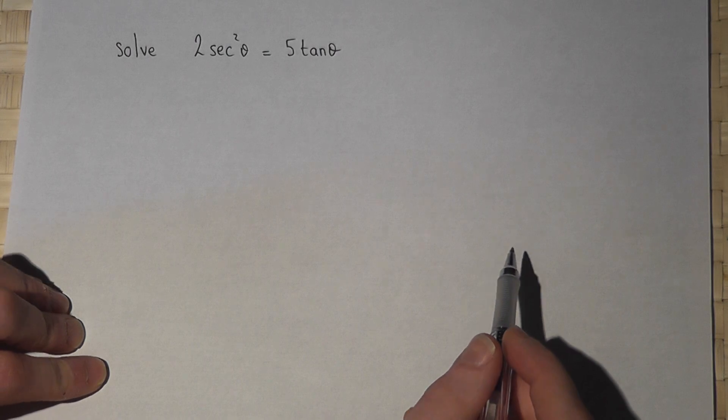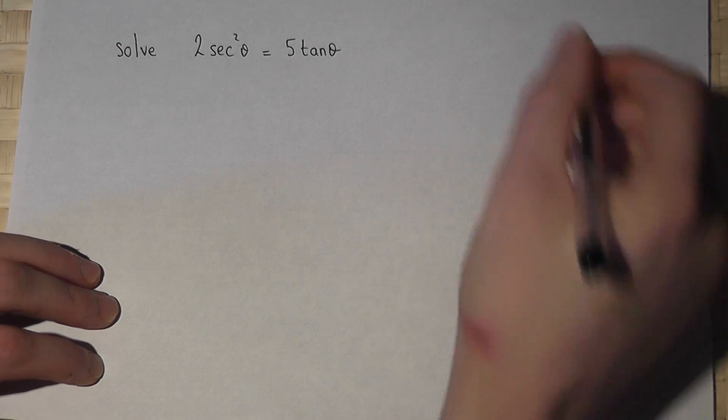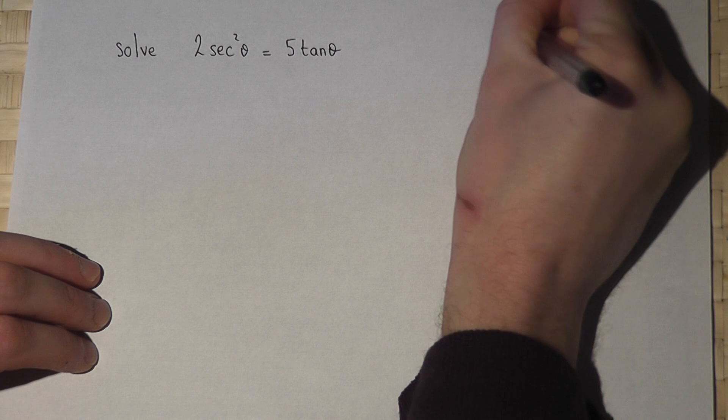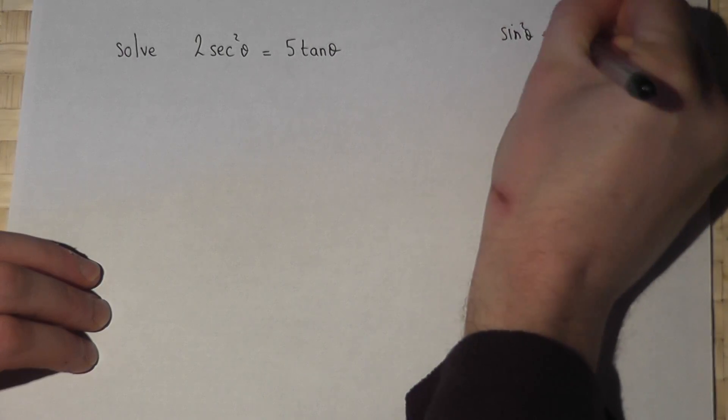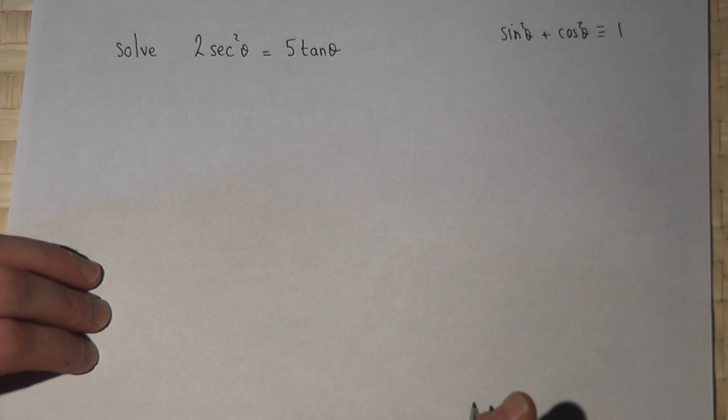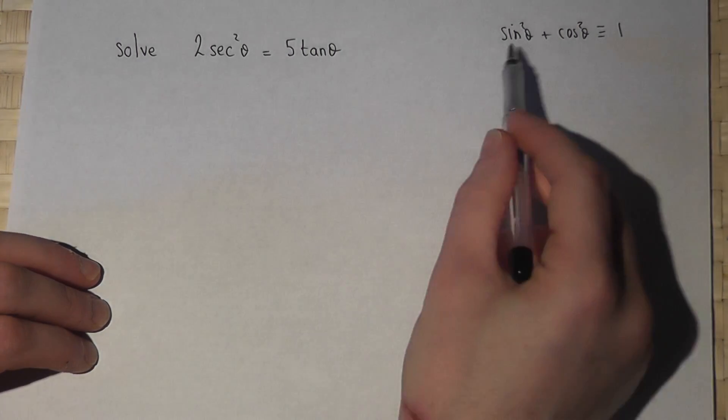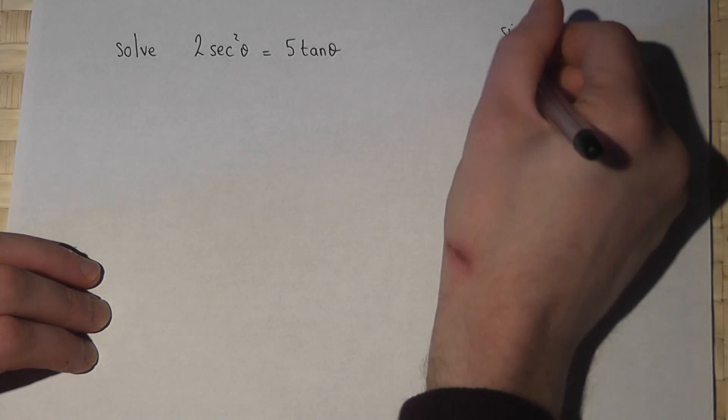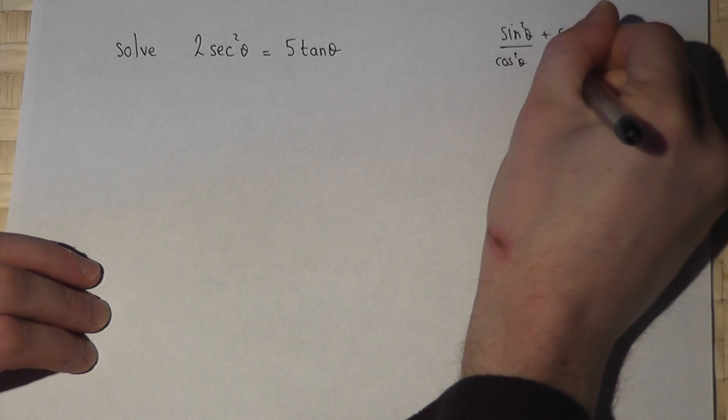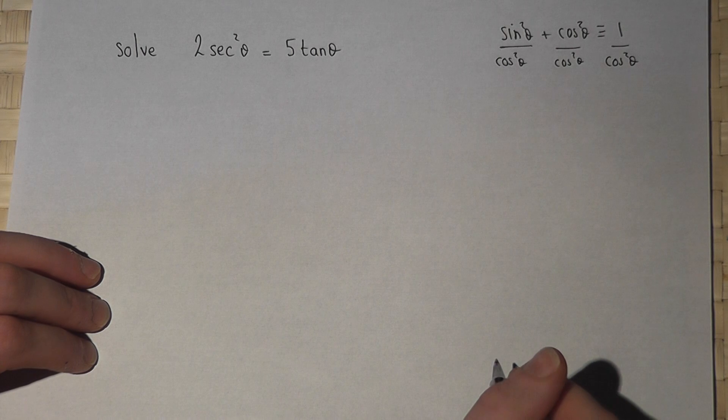There are some golden rules to be aware of to allow us to solve an equation of this type. The fundamental rule is that sine squared theta plus cos squared theta is always 1. However, if I divide each term in this expression by cos squared theta, I can derive another equation.